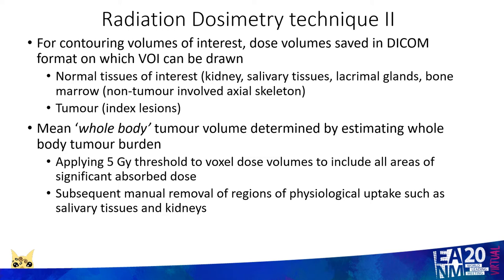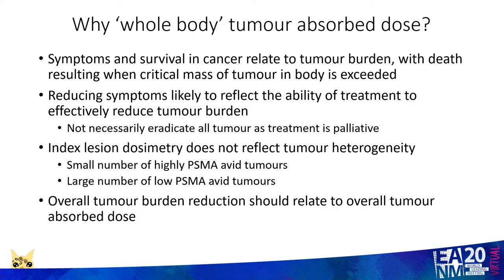More recently we have begun creating a volume described as a mean whole body tumour volume, which attempts to estimate the whole body tumour burden. We do this by applying a five-gray threshold to the voxel dose volumes to include all areas of significant absorbed dose, and then manually removing regions of physiological uptake such as salivary tissues and kidneys. We use this whole body tumour absorbed dose because symptoms and survival in cancer largely relate to tumour burden, with death resulting when the critical mass of tumour is such that the body proceeds to physiological breakdown. Reducing symptoms in patients with metastatic disease therefore likely reflects the ability of a given treatment to effectively reduce tumour burden.